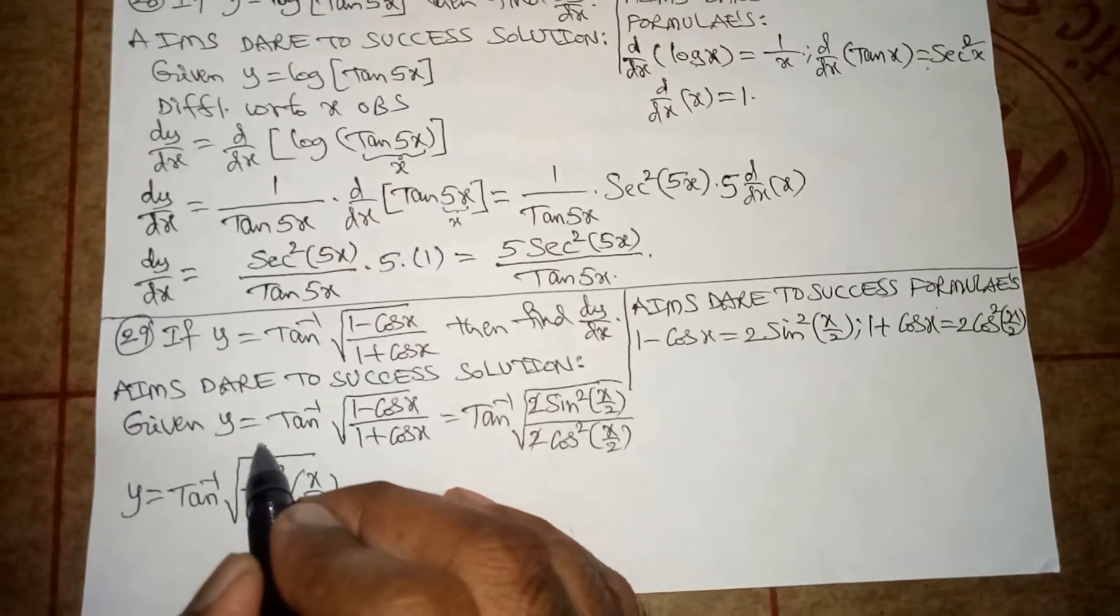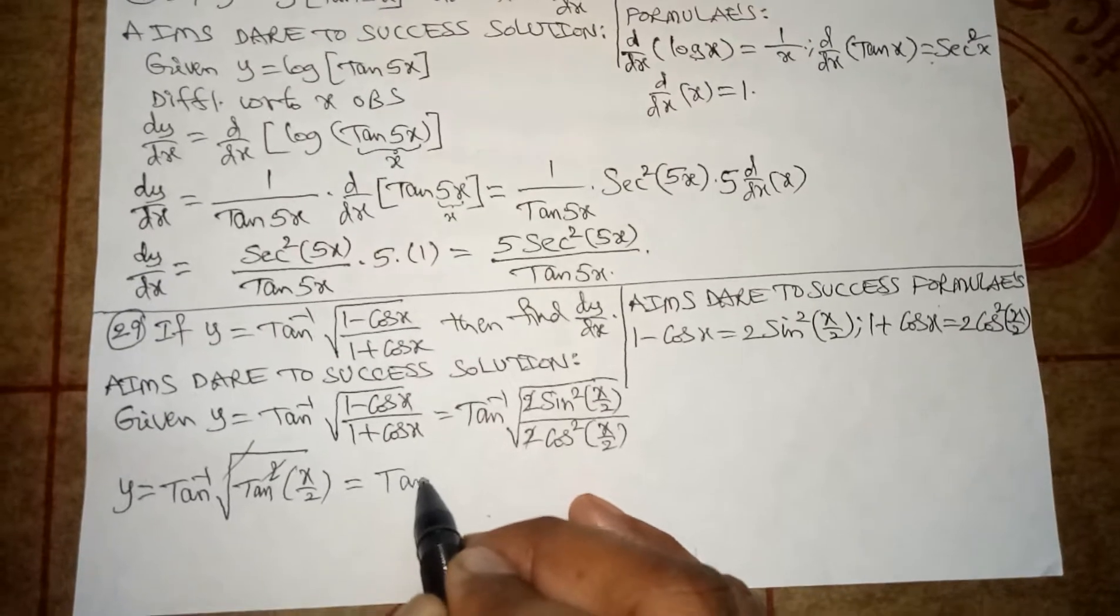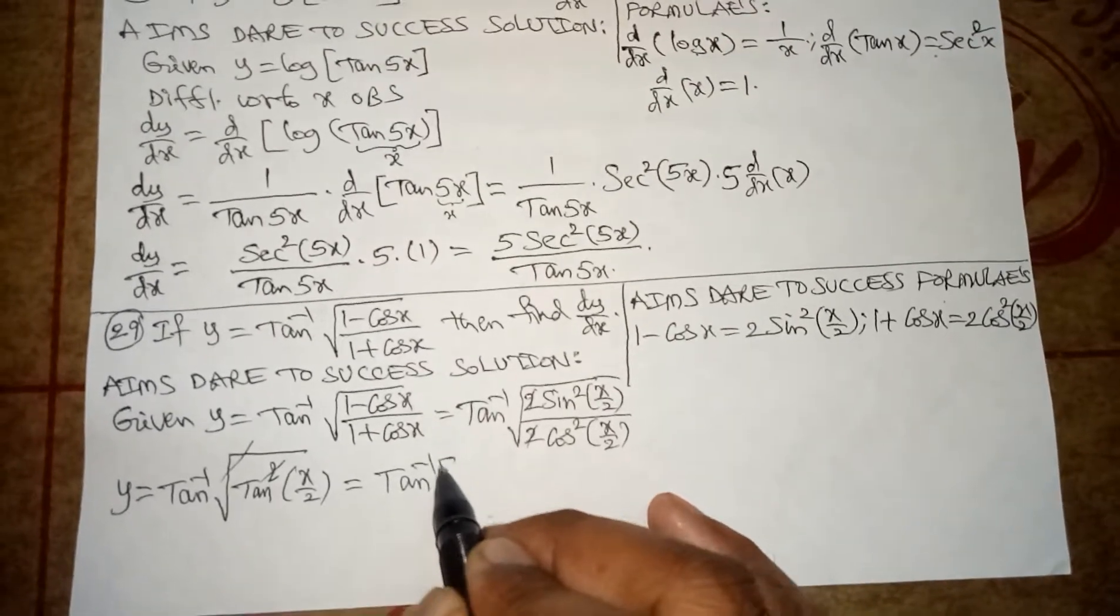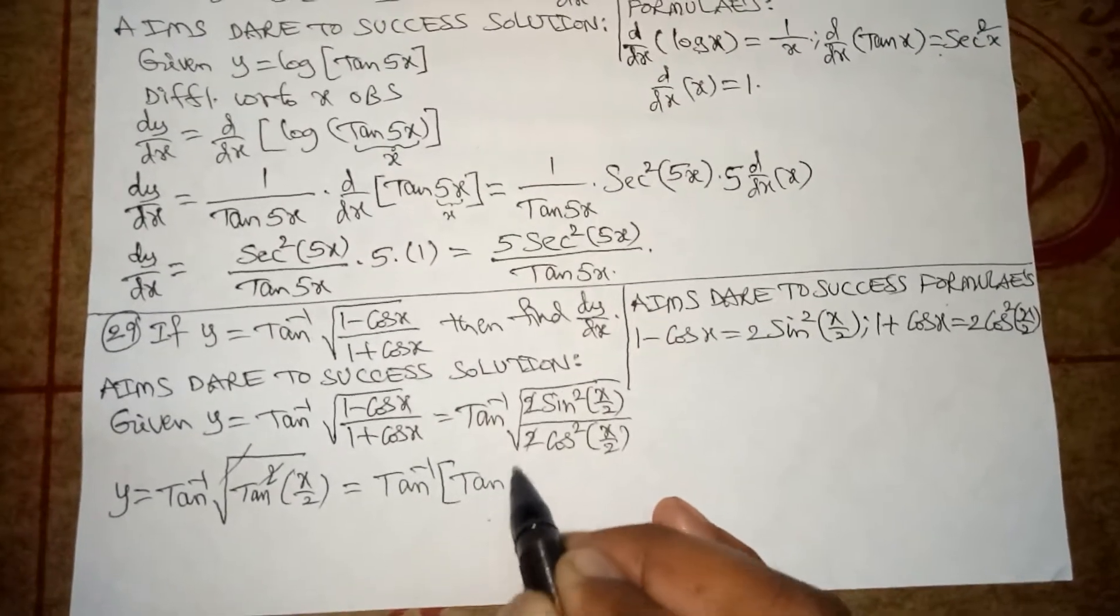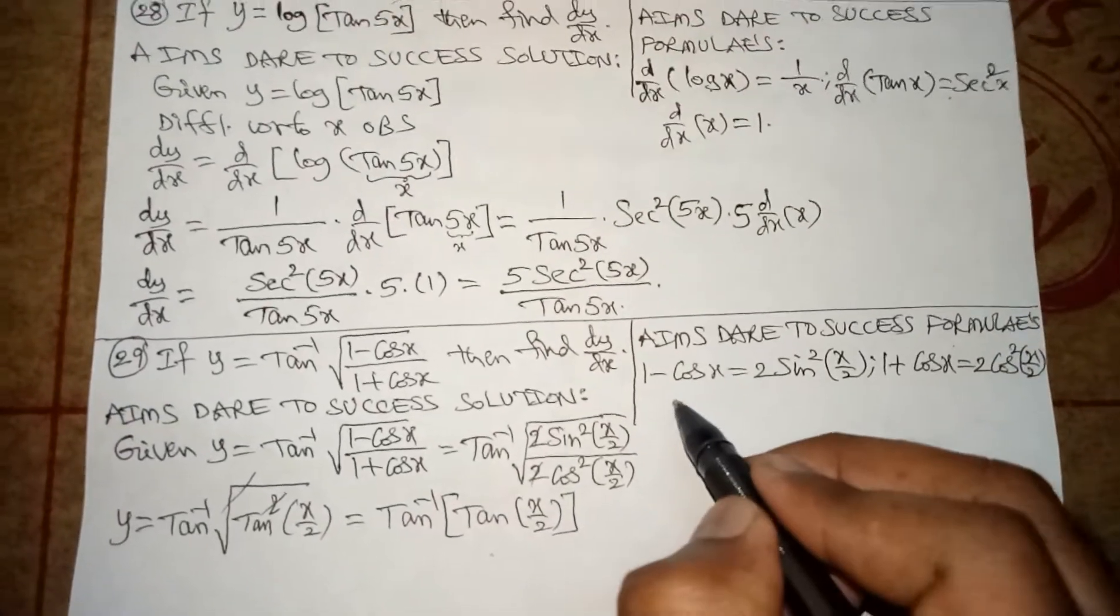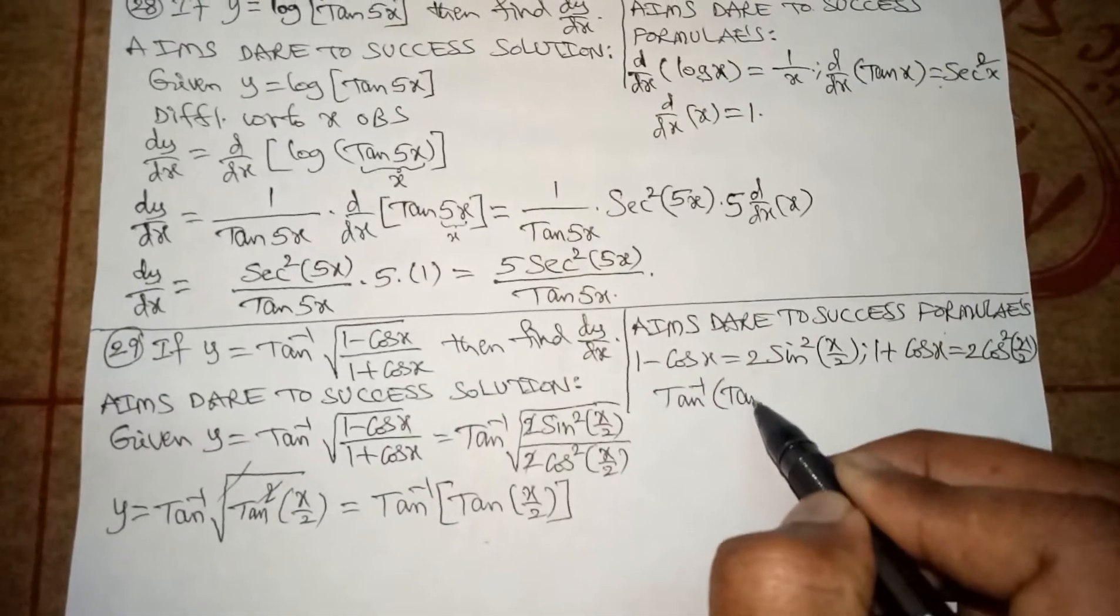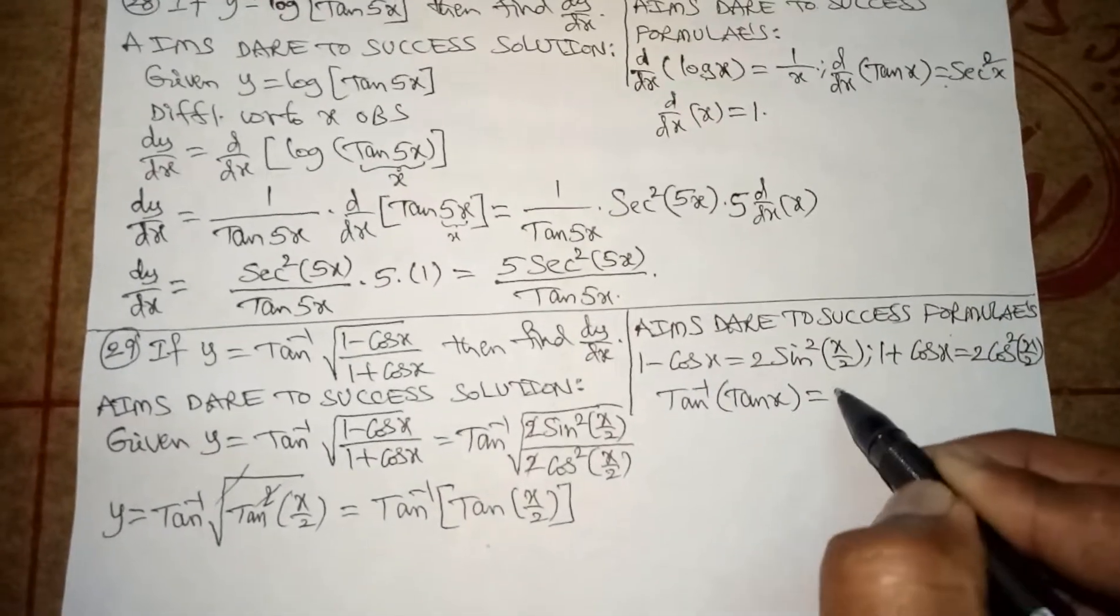Here square root and square get cancelled. We get tan inverse of tan(x by 2). Here one more formula: tan inverse of tan x is equal to x.